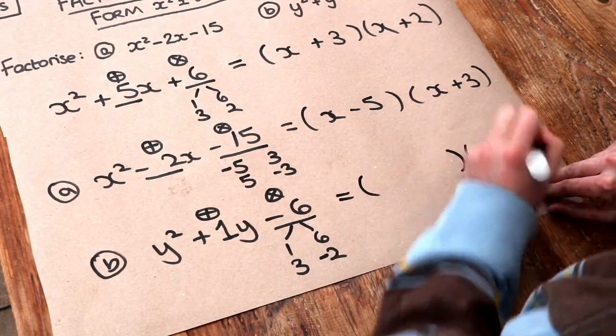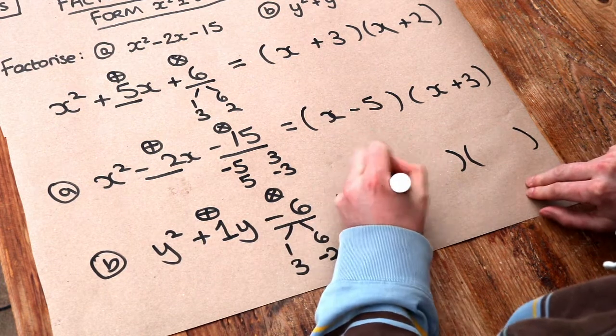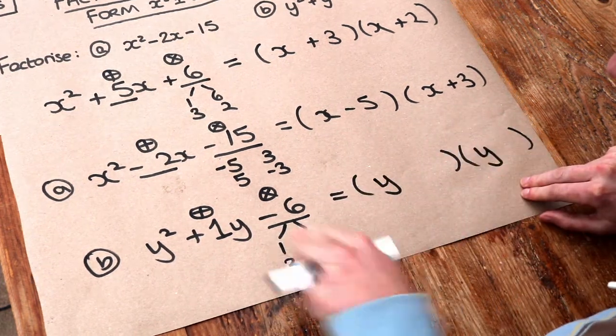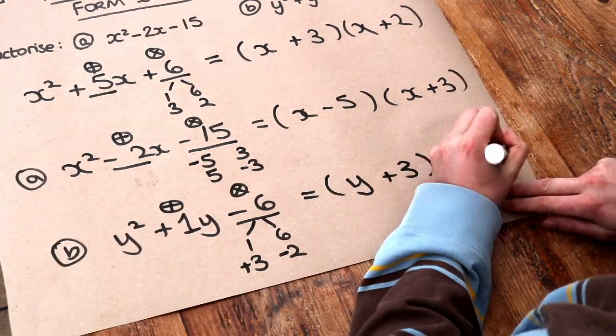So therefore we have these two brackets. We put a y at the start because this is in terms of y rather than x this time. And then the two numbers are plus 3 and negative 2. So don't forget that plus symbol there. And that is it.